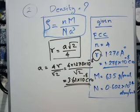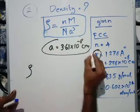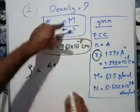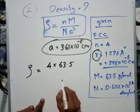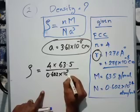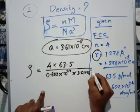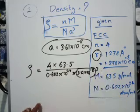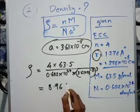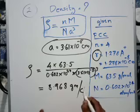Now we can write the density: rho equals n times m divided by N times a cubed. Substituting: 4 into 63.5, divided by 6.023 into 10 raised to 24, times (3.61 into 10 raised to minus 8) cubed. The result is approximately 8.968 grams per centimeter cubed.